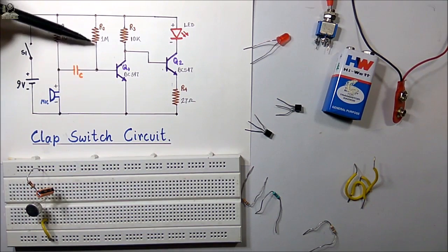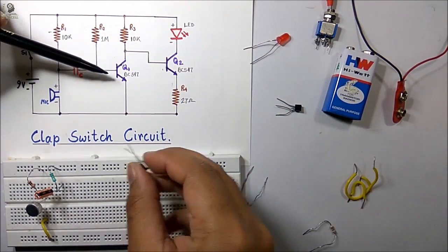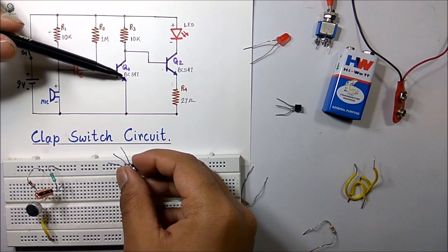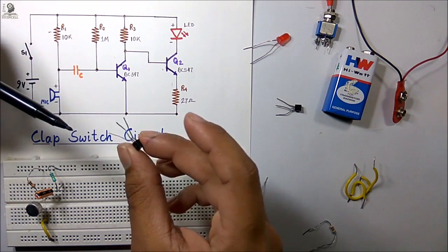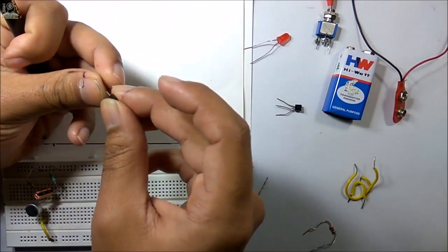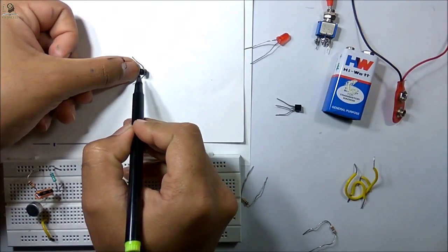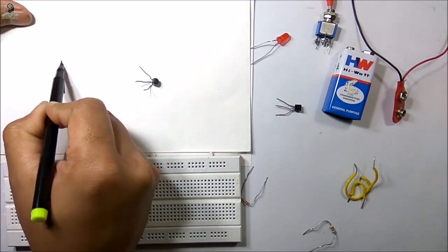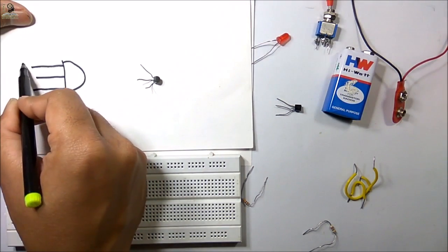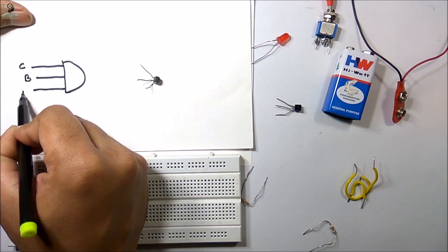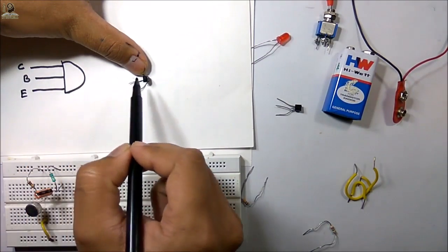After that I will connect this 1 megaohm resistor. Next I will connect the Q1 transistor, which is a BC547 NPN transistor, in common emitter mode. To identify the base, collector, and emitter terminals, place the transistor with the curved portion facing this side. The first terminal is the collector, the middle terminal is the base, and the last terminal is the emitter.